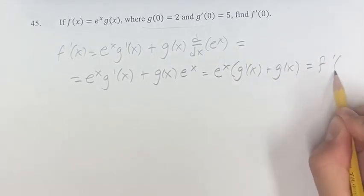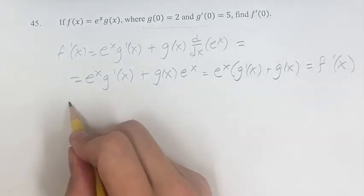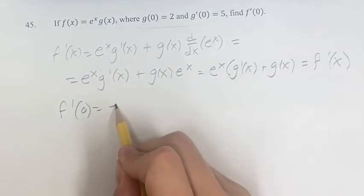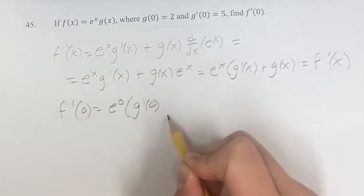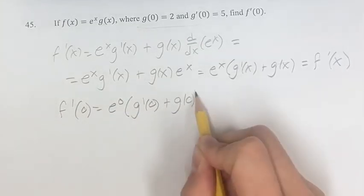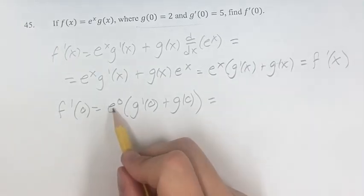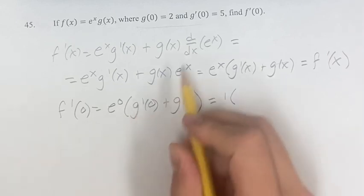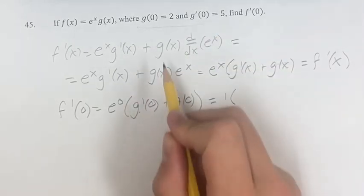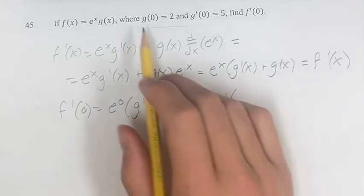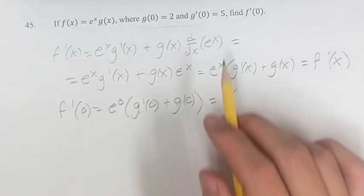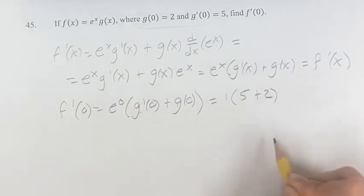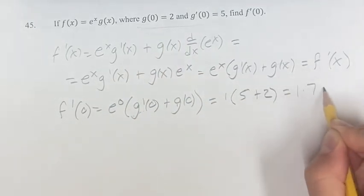And this is your general form of the derivative. So f prime of 0, just plug in 0 for all of these. We have e to the 0 times g prime of 0 plus g of 0. This is equal to, e to the 0 is just 1. So we have 1 times, we have this value given and this value given. That's where this comes in, but we didn't need it until now. So we have 5 plus 2. We have 1 times 7, which is just 7. That's your final answer.